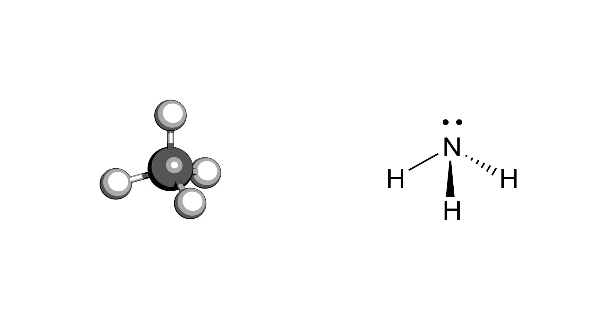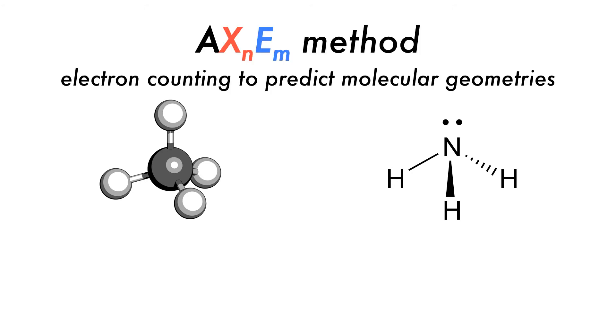VSEPR is a powerful theory that can allow us to predict the shapes of molecules. If we make use of the AXE system of electron counting, we can determine the numbers of bond and lone pair domains around a central atom.